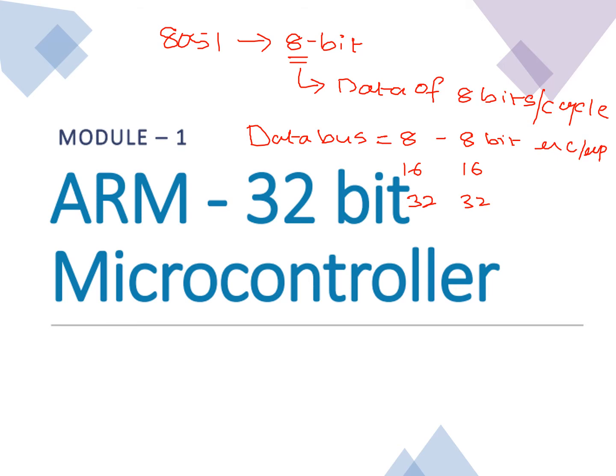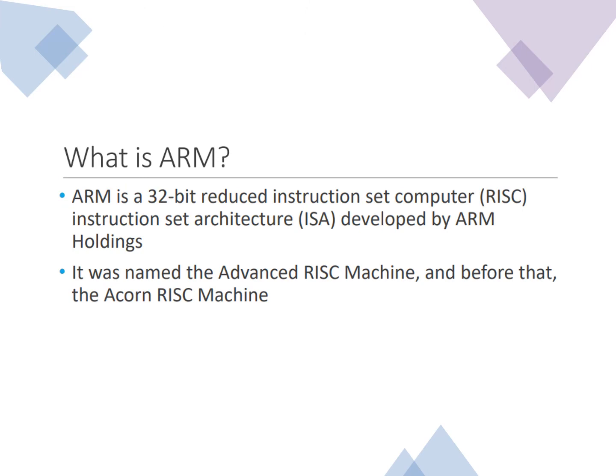ARM is a 32-bit Reduced Instruction Set Computer (RISC) instruction set architecture developed by ARM Holdings. It was named the Advanced RISC Machine, and before that it was known as the Acorn RISC Machine. RISC stands for Reduced Instruction Set Computer. There is another version called CISC — Complex Instruction Set Computer.